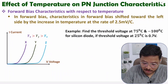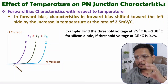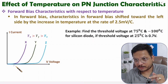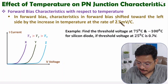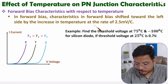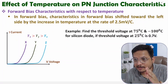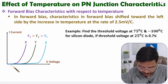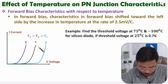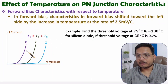In forward bias, the P-N junction V-I characteristic appears in the first quadrant. As you increase temperature, the characteristic shifts towards the left side at a rate of 2.5 millivolts per degree Celsius. You can observe characteristics X, Y, and Z shown here, where TX is greater than TY is greater than TZ — as temperature increases, the characteristic shifts left.